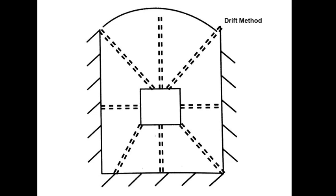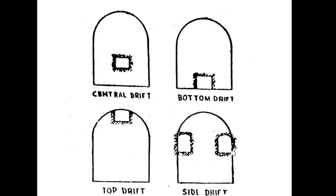Drift method: only one small part is first excavated, and various drifts can be excavated throughout the length and face of the tunnel. This small excavated section is called a drift. The drift can be a side drift, top drift, bottom drift, or center drift. Center drift is where excavation is carried out at the center; bottom drift at the bottom of the tunnel face; top drift at the top; and side drift at the side. Multiple drift methods can also be constructed from the side, bottom, and top.